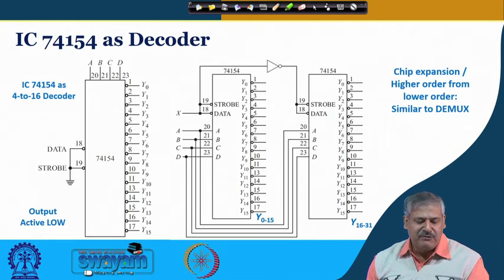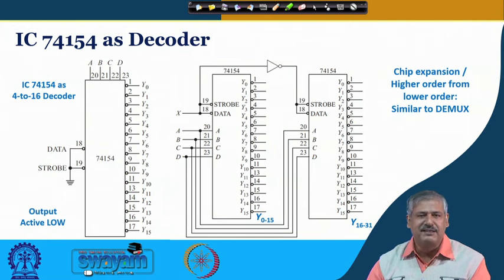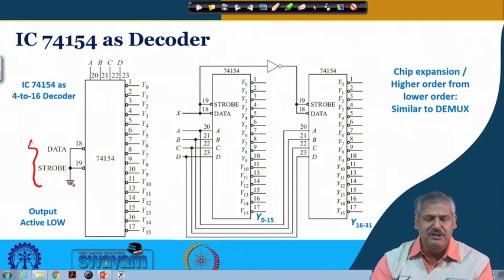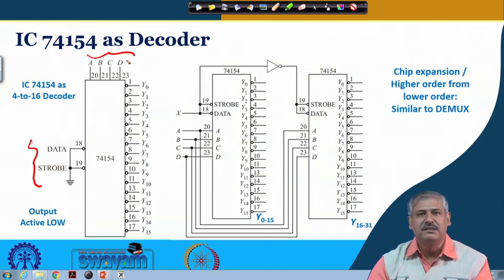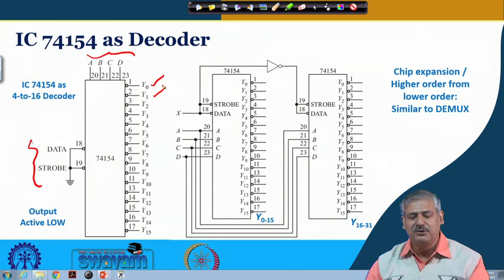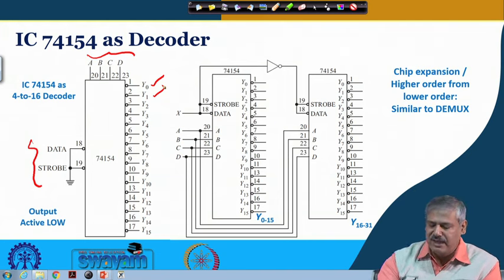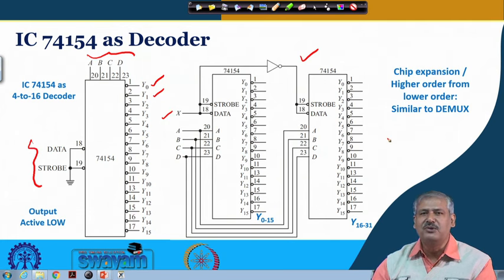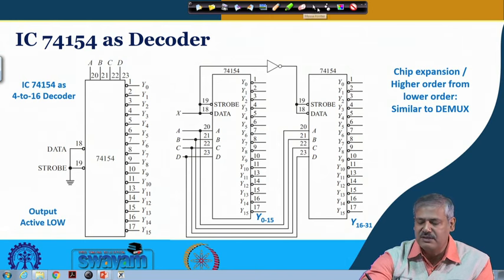IC 74154, a 1-to-16 demultiplexer, can work as a 4-to-16 decoder by connecting the strobe to ground (active low) and using A, B, C, D as input bit patterns. If 0000 is present, Y0 activates; if 0001 is present, Y1 activates, and so on. Similarly, to make a 5-to-32 decoder, we use the same cascading technique with strobe and data as was done for demultiplexer expansion, with the fifth input enabling the 5-to-32 decoding.